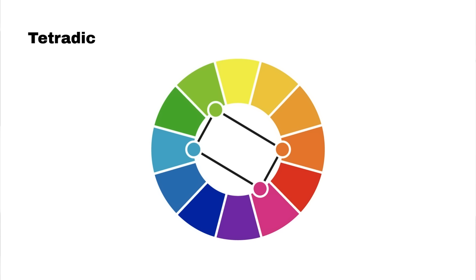Now that you know the difference between these two color modes, let's take a look at how you can create a color palette. Just like warm colors represent passion and energy, and cool colors represent calm and tranquility, the rest of the color wheel can also evoke certain emotions and behaviors. Color psychology is a powerful tool in graphic design. There are different factors that affect how people perceive colors, including cultural backgrounds, age, gender, and sometimes life experience.